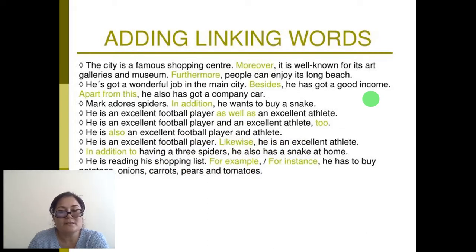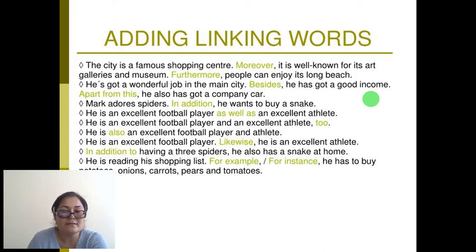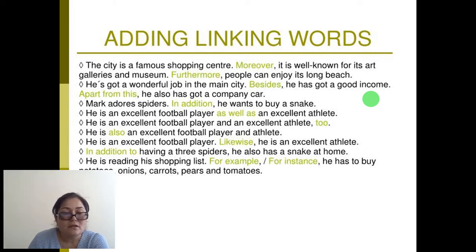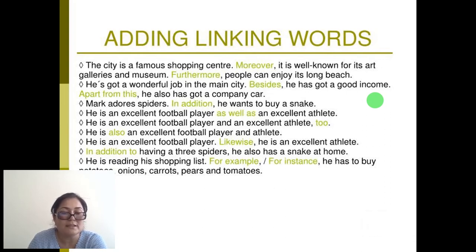For example: 'The city is a famous shopping center. Moreover, it is well known for its art galleries and museum. Furthermore, people can enjoy its long beach.' 'He has got a wonderful job in the main city. Besides, he has got a good income. Apart from this, he also has got a company car.' 'Mark has spiders. In addition, he wants to buy a snake.' 'He is an excellent football player, as well as an excellent athlete.' 'In addition to having three spiders, he also has a snake at home.' 'He is reading his shopping list — for example, he has to buy potatoes, onions, carrots, peas and tomatoes.'